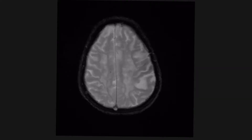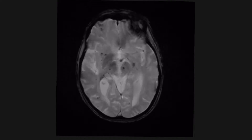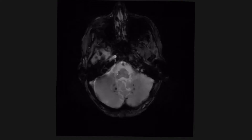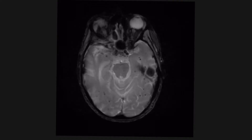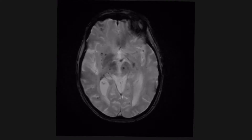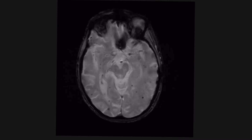On this T2 star sequence, we can see multiple areas of low signal which are in keeping with haemosiderin deposition. This is a case of amyloid angiopathy in which these microhaemorrhages occur usually at the grey-white matter junction.